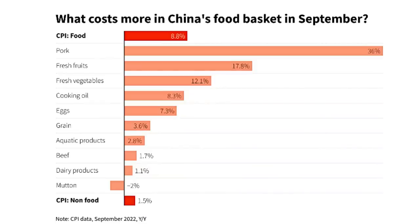But it's not just pork driving higher food prices. The cost of fresh fruit is up almost 18%, and fresh vegetables are up by more than 12%. The price of cooking oil in China is up by 8.3%, and this is directly related to what's going on in Ukraine. Ukraine and Russia are two of the largest exporters of sunflower seeds, which are used to make sunflower oil. So we've got a global shortage of sunflower oil right now, meaning everybody has had to move to other forms of oil, and the price of all cooking oil around the world has risen dramatically over the last seven months.